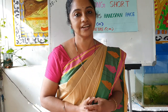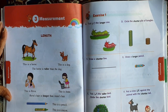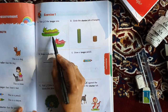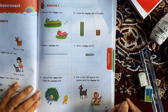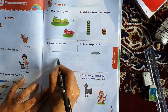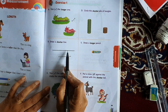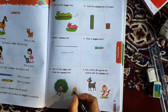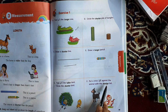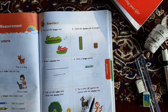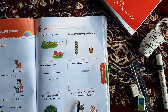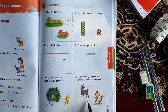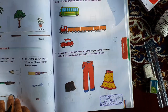Next, we are going to do the exercises given in our textbook. Open your textbook at page number 49. Tick the longer one — this one is the longer one. Draw a shorter line — this is long, this is short. Tick the taller bird — this one is the taller bird. Put a cross against the animal with the shorter tail — this one has the shorter tail.